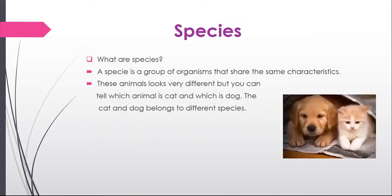A species is the most detailed form of classification of living things. In living things, a species is a group of similar individuals that are able to reproduce.